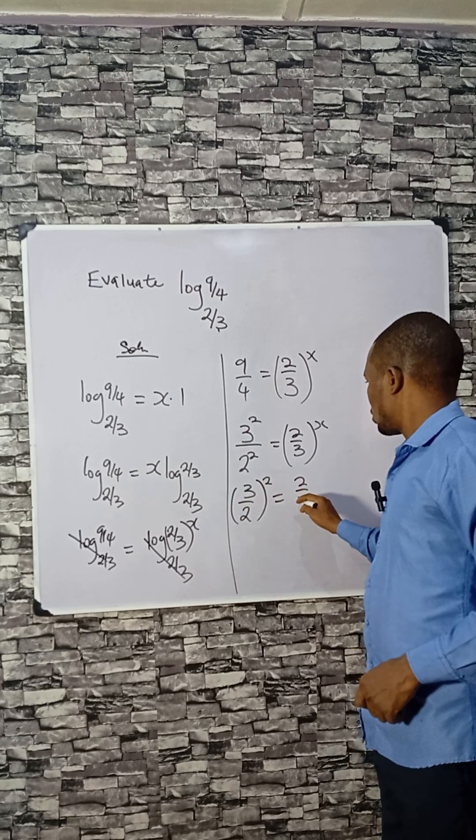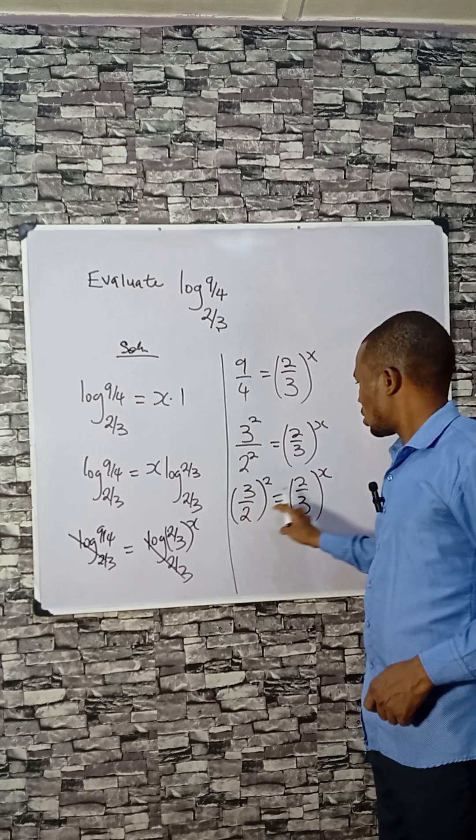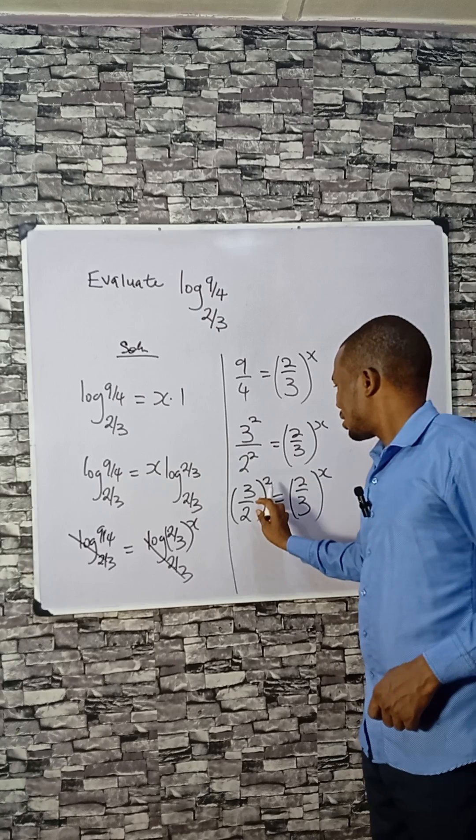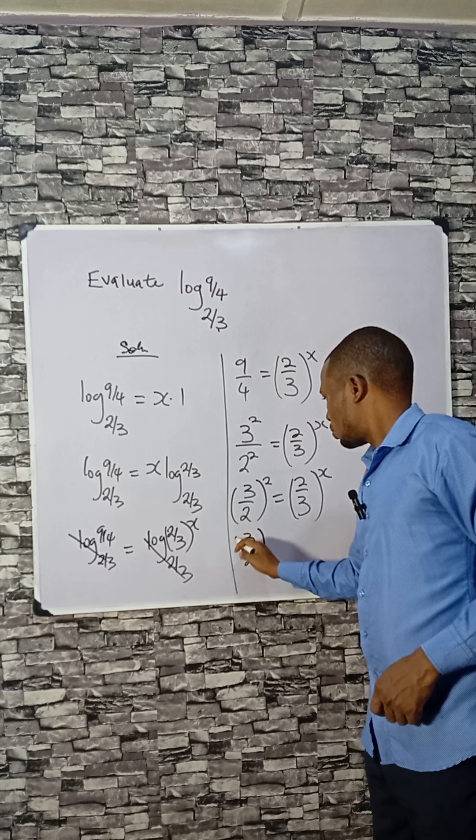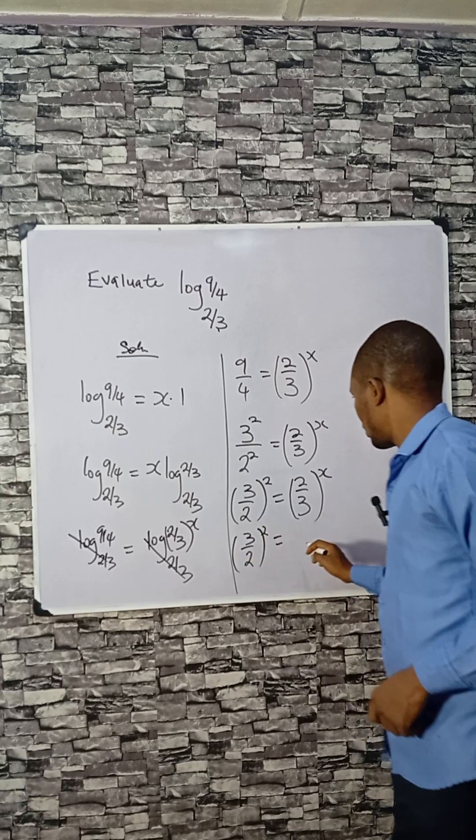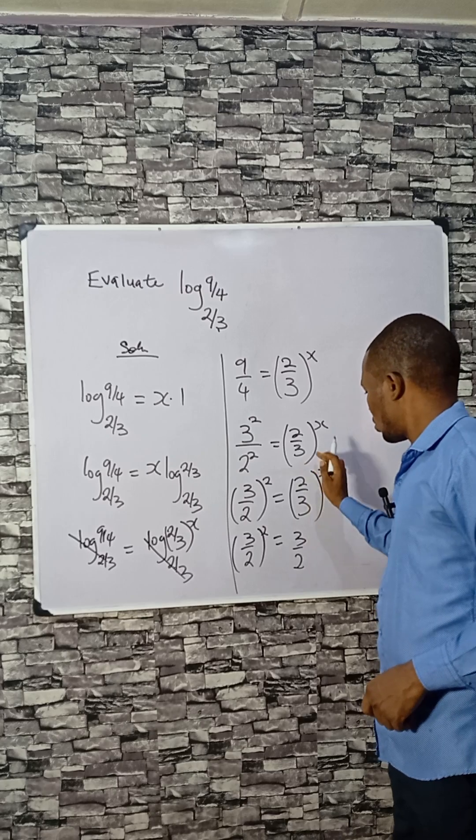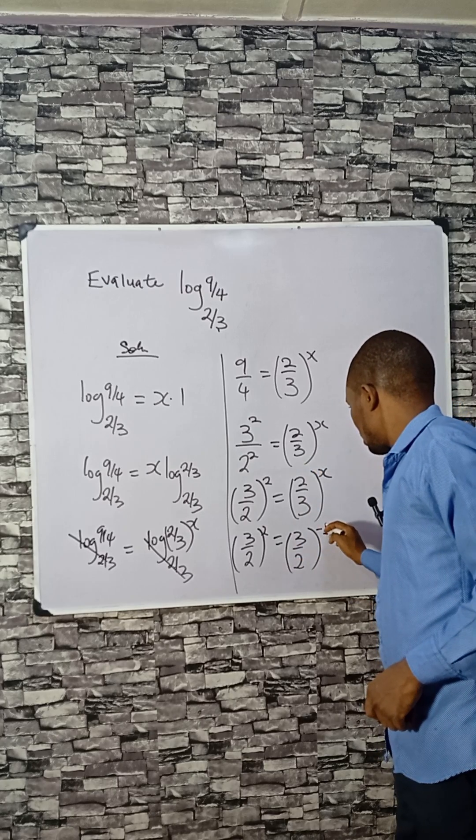What I aim here is to ensure that they have the same base. This is 3 over 2, while this is 2 over 3, so let's take the reciprocal of this side. If that happens, we will have 3 over 2. That means this one goes up then times minus 1 because it's reciprocal.